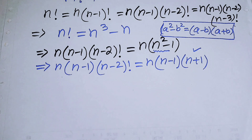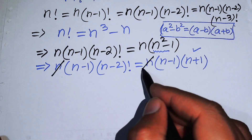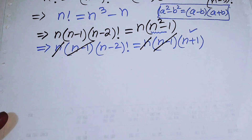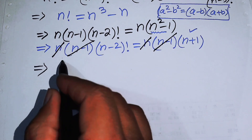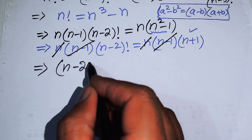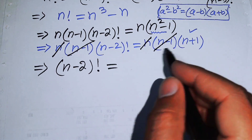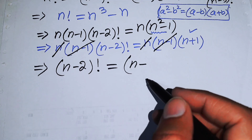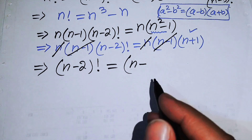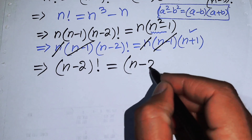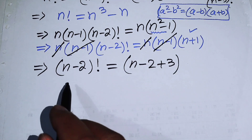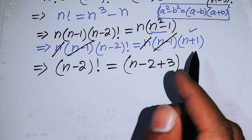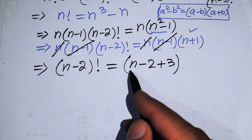Now focus on both sides — n cancels with n and (n-1) cancels with (n-1), and we obtain (n-2) factorial equals (n+1). We then rewrite n+1 as (n-2) plus 3, since on the left-hand side we have (n-2), and we want to make (n-2) appear on the right-hand side as well.